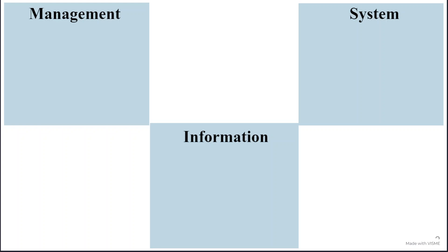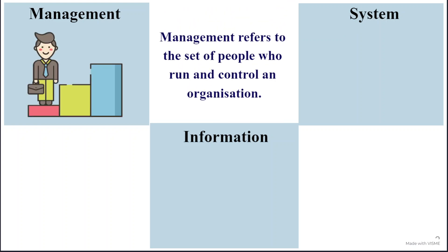MIS consists of three words: management, information, and system. Let us understand the meaning of each of these words separately first. Management basically refers to those people in an organization that run and control that organization by taking certain decisions as and when required. Management refers to the top-level management or the bosses of an organization — it can be the vice chairperson or chairperson for an educational institute, the departmental head for a department, or in case of an enterprise, the chief executive officer, the chief financial officer, and so on.